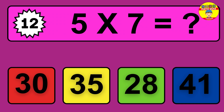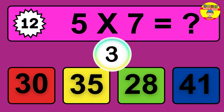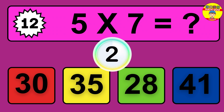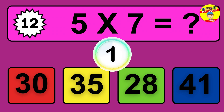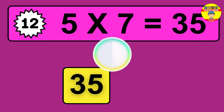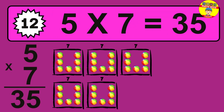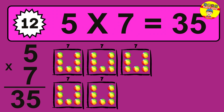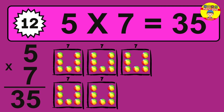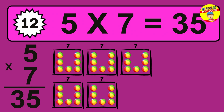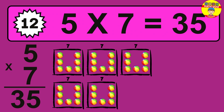Question 12. 5 times 7 equals what? The answer is 5 times 7 is 35. To calculate, we have 5 groups with 7 balls each one. So how many balls do we have? 35 balls.